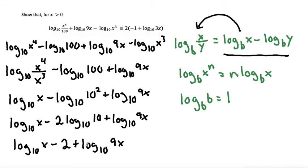Now that I have two logs with the x's left in them, we can use one more rule: that log base b of x plus log base b of y is equal to log base b of x times y.